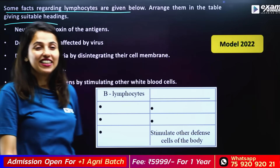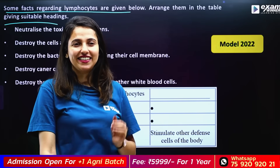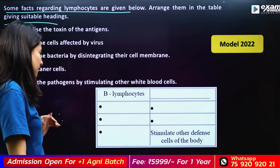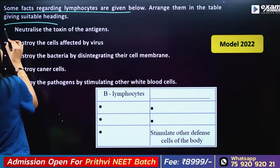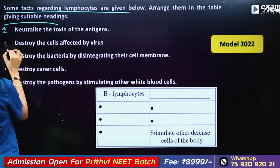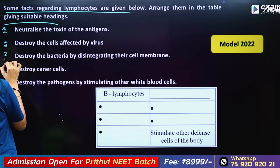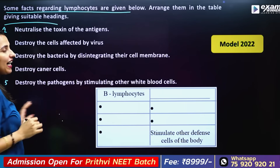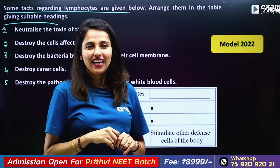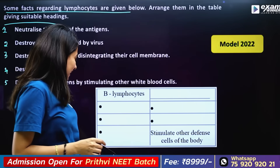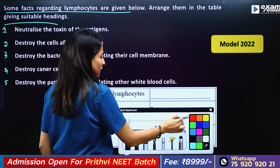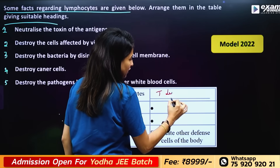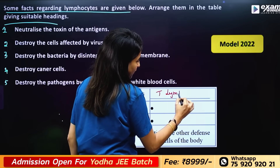We talked about how we got involved in this video and in the classes. We have two types of lymphocytes: B lymphocyte and T lymphocyte.